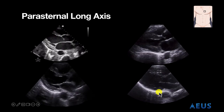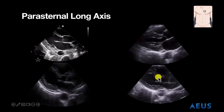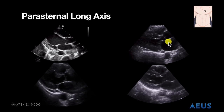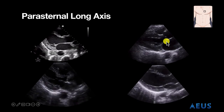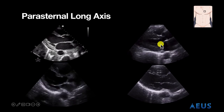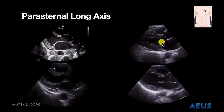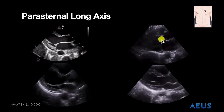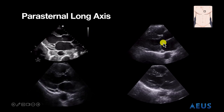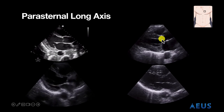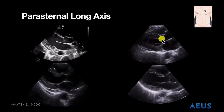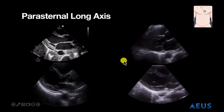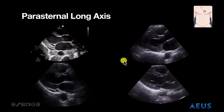Let's talk about EF. When it comes to EF, we often look at the anterior leaflet of the mitral valve to see if it's hitting the septum or not. In these images we can see the anterior leaflet does appear to be hitting the septum, indicating a relatively good EF.